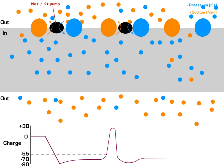A couple more things about the action potential: remember that it's always the same size for a given neuron and always travels at the same speed. The only way that a neuron can encode the strength of a signal is through the frequency of action potentials. By firing in rapid succession, a high frequency of action potentials is a way that a neuron can tell the postsynaptic cell that it is a stronger stimulus. So hopefully this helps — I know the animation took forever to complete, it's a lot easier to draw it out, but hopefully it helps you understand this concept. Thank you.